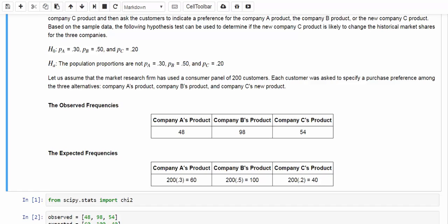With a total of 200 customers, we can compute the expected frequencies as well, based on Pa is equal to 0.3, Pb is 0.5, and Pc is 0.2. As a result, we are expected to see 60 customers out of the 200 prefer A's product, 100 prefer B's product, and 40 prefer C's product.